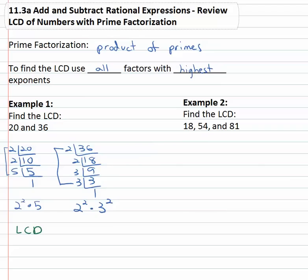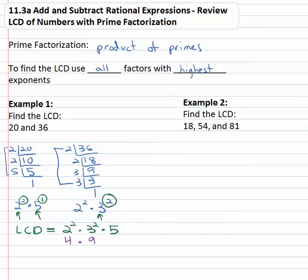To find the least common multiple or least common denominator, we take each factor — we see factors of 2, factors of 3, and factors of 5 — and we assign each factor its highest exponent. The highest exponent on 2 is squared, the highest exponent on 3 is squared, and 5 only has an exponent of one. So the least common multiple is 2 squared times 3 squared times 5. Two squared is 4, three squared is 9, four times nine is 36, and 36 times 5 is 180. The least common denominator of 20 and 36 is 180.